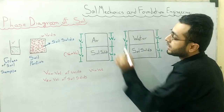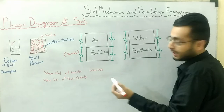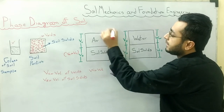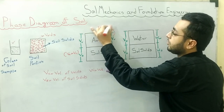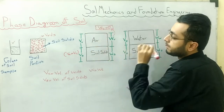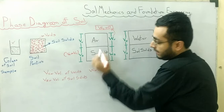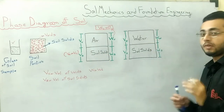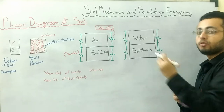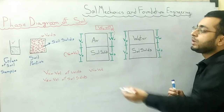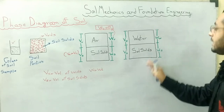Similarly, if we talk about the weight of the voids, the weight of air is zero. Therefore, Wv, the weight of voids, is equal to zero because air has no weight. So we write: Wv = 0. This diagram is the graphical representation of dry soil, because it has no moisture content. Its moisture content and degree of saturation are both equal to zero.